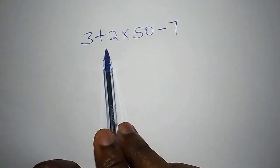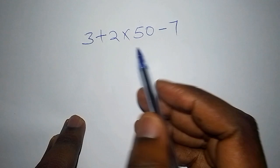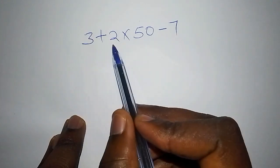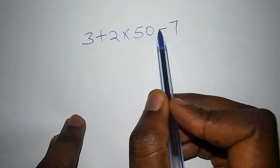Do you know 90% of people fail this mathematics? Now, you are welcome to this channel. I want us to work out this, the method that they used that made them fail. We have 3 plus 2 multiplied by 50 subtract 7.